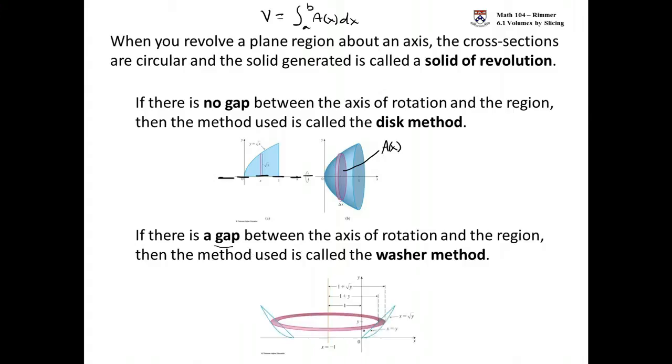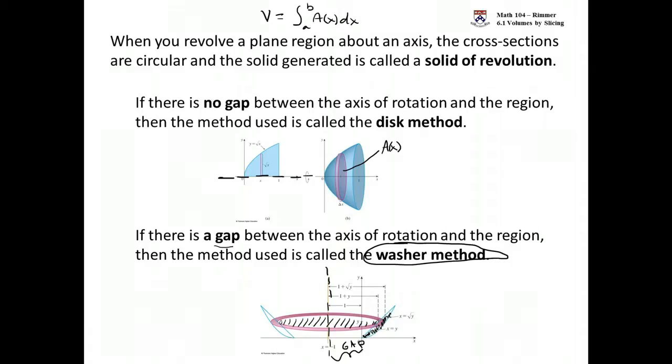Here's an example. I have this region here, and then my axis is all the way over here. I have this gap between my region and my axis. When I go to revolve, I don't get a solid disk like above. That's called the washer method. I like to think about the washer method as basically there's an outer disk and from that you subtract some inner disk.